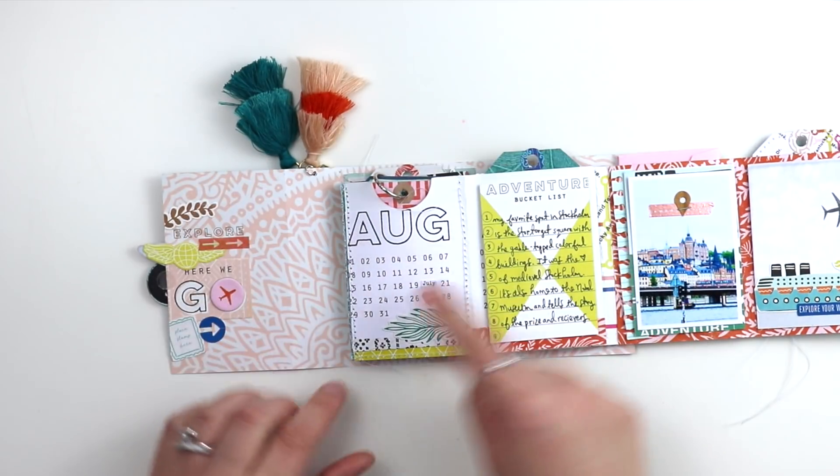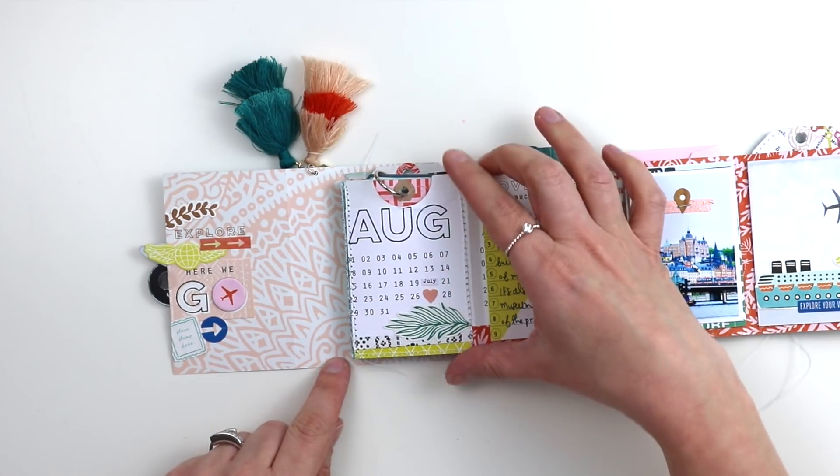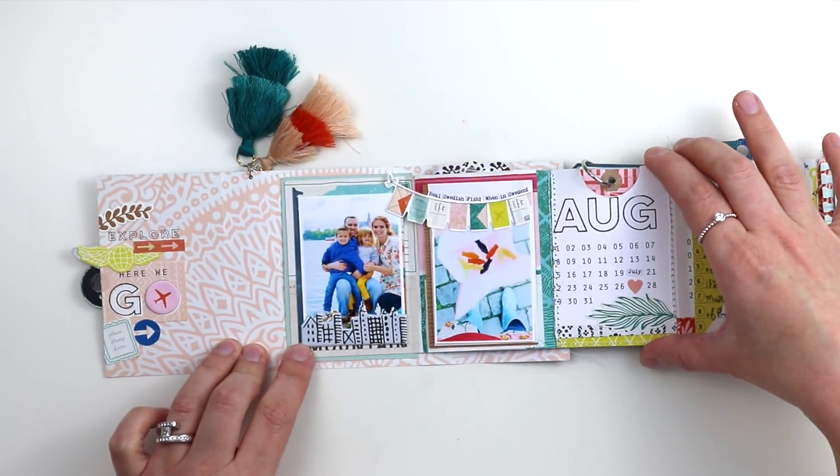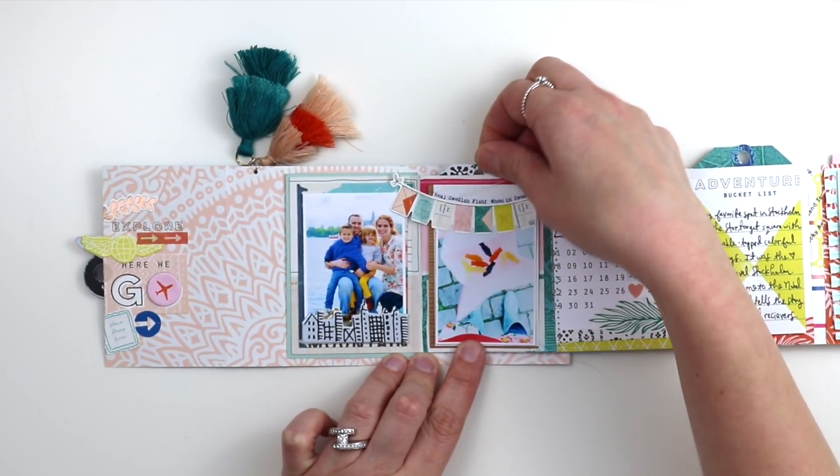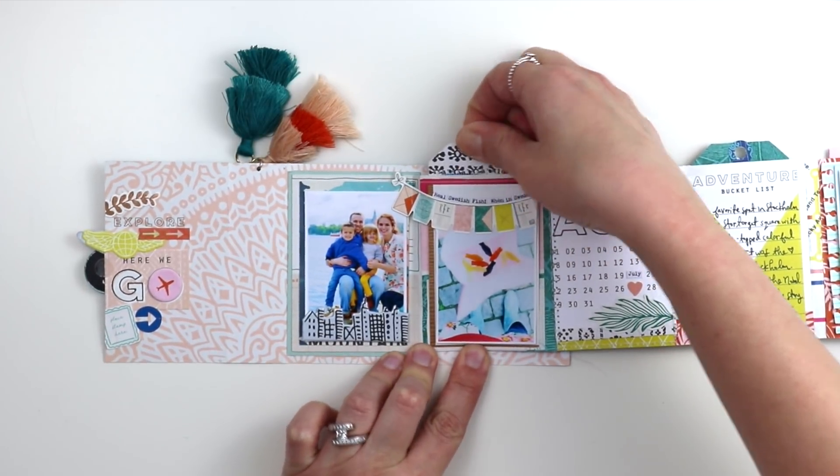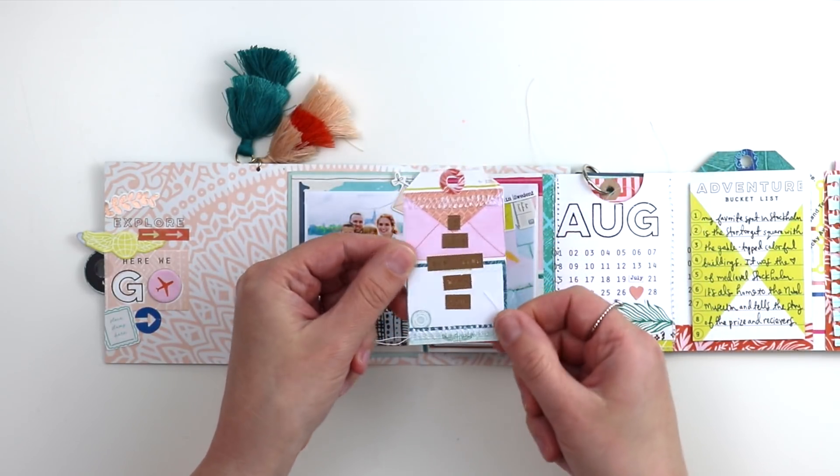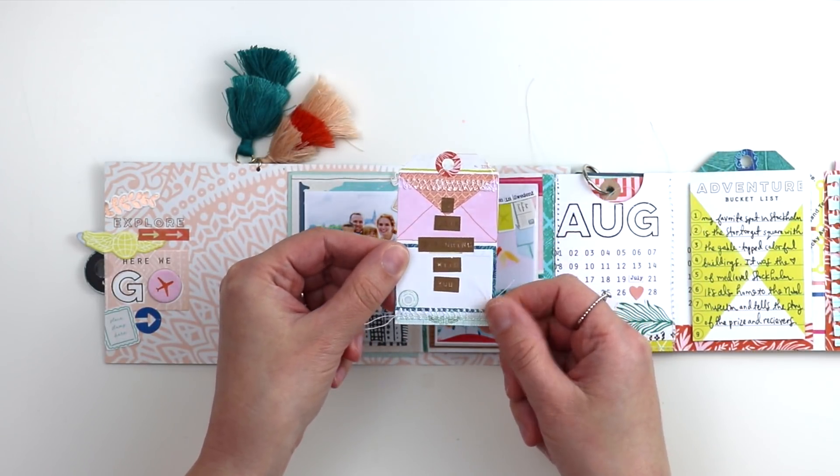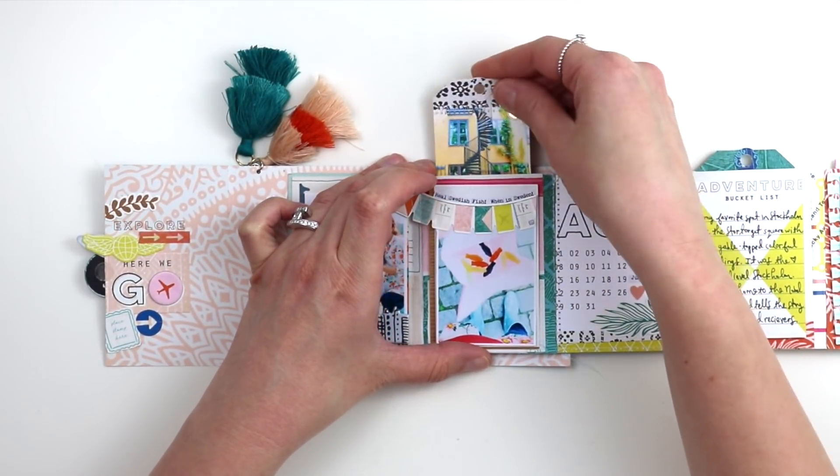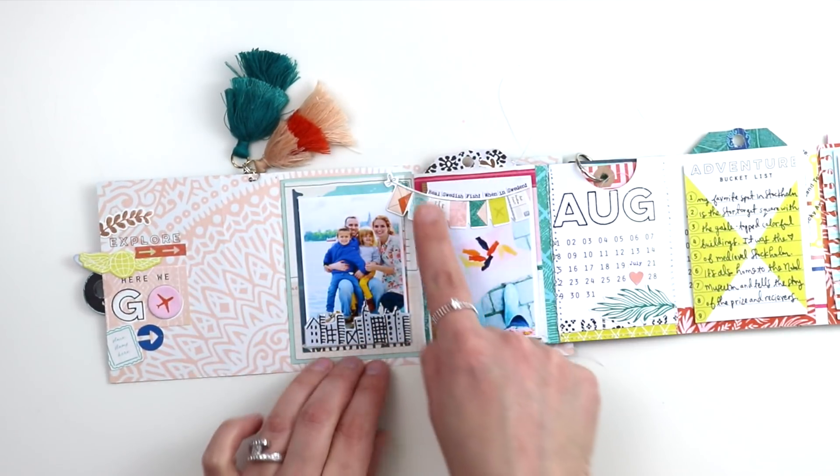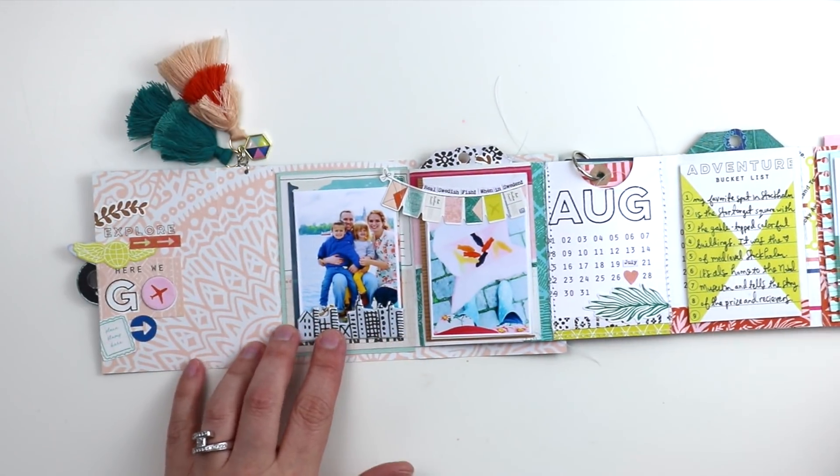We actually went in July, so above that heart sticker on the 27th I put July. You go with it sometimes. In this pocket is another tag. This is one that I hand cut from pattern paper, added a photo, some machine stitching, and on the back is just some stickers. I think it's one full length sentiment sticker and I cut it up into pieces. Added a banner sticker with some journaling that says, real Swedish fish when in Sweden.